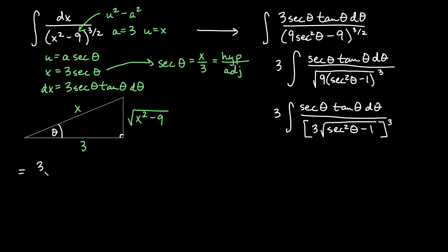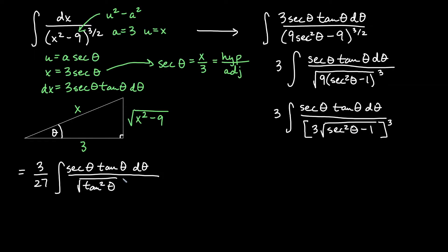So we would say 3 over 27, which of course we'll reduce in a second. Integral secant theta tan theta. Let's go ahead and simplify our bottom d theta. So this will be Pythagorean identity becoming tangent squared theta underneath the root. And don't forget your cube on the bottom here. We'll go ahead and reduce our 3 over 27. We'll become 1 over 9. We will get the antiderivative of secant theta tangent theta d theta over.